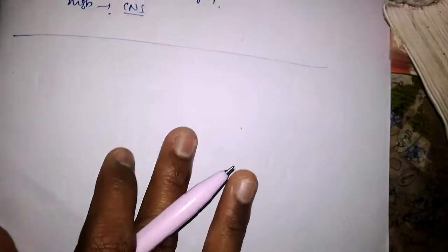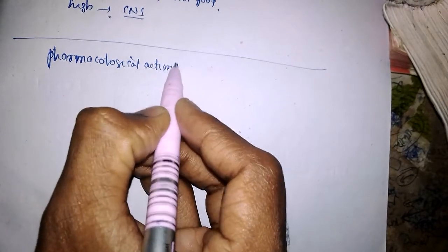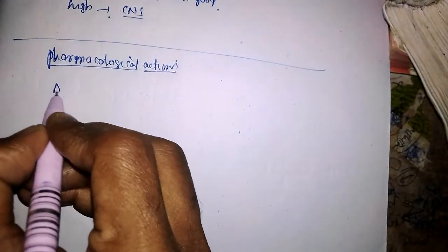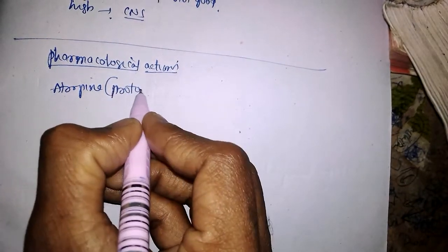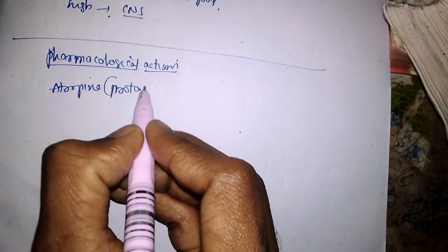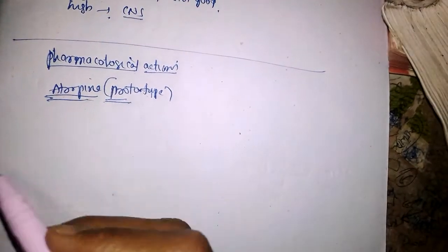Let us discuss the pharmacological actions of anticholinergic drugs. We will use atropine as the prototype, and this will be applied to all other drugs. We discussed the classification in the last lecture. In this lecture, we will mainly focus on actions, adverse effects, and uses.